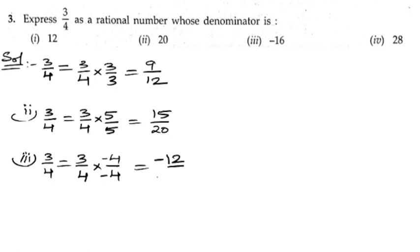Next, fourth bit. In fourth bit we need to make it 28. We have 3/4, so let us multiply it with 7. 3 times 7 is 21, and 4 times 7 is 28. So this is the required solution of the third problem.